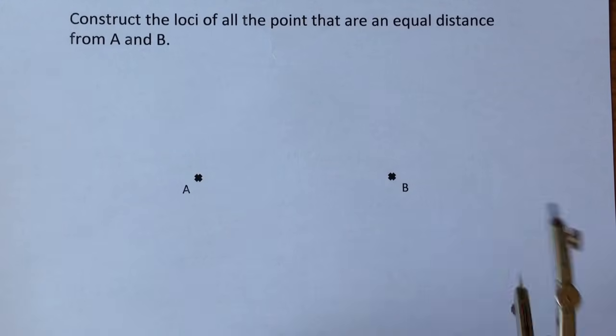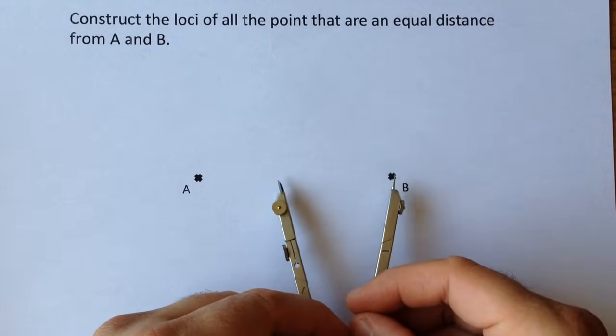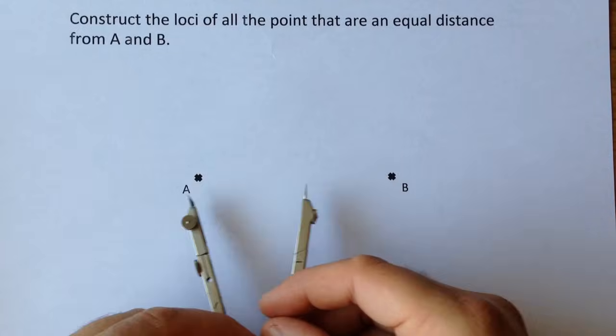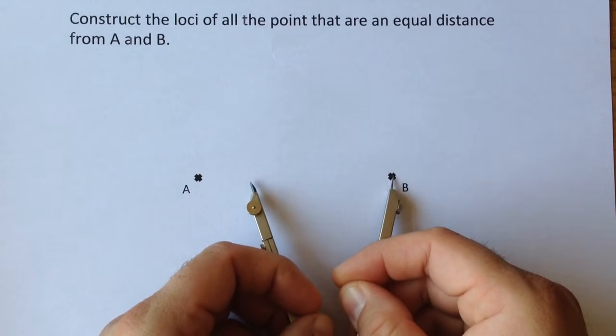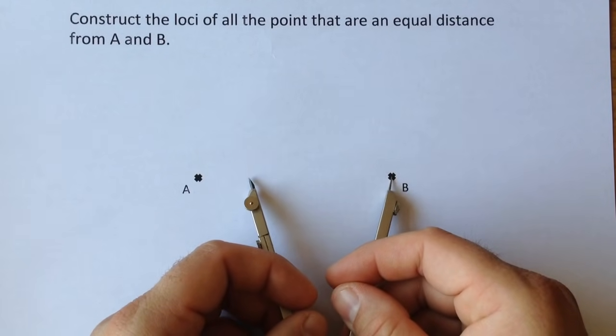So, first of all, you need to open up your compass to more than half the distance between A and B. If it's less than half or equal to half, your arcs aren't going to intersect, so open it up, make sure it's definitely more than half the distance.